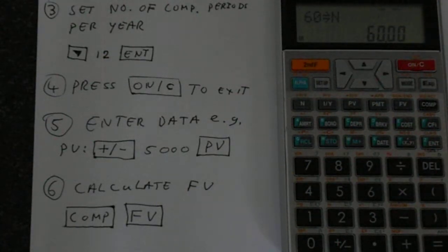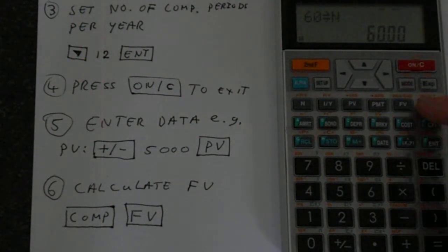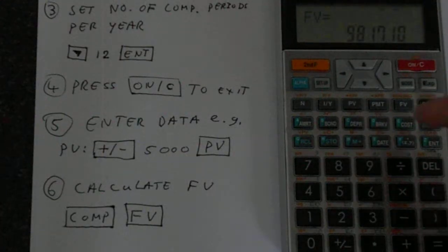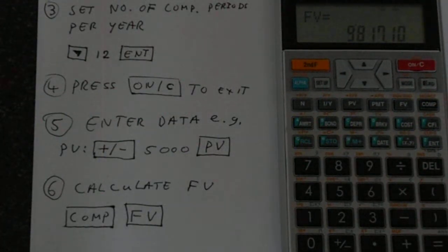Now, last step, we can just calculate the future value. So we do this by pressing COMP and then FV for future value. And we get 9,817 as our answer.